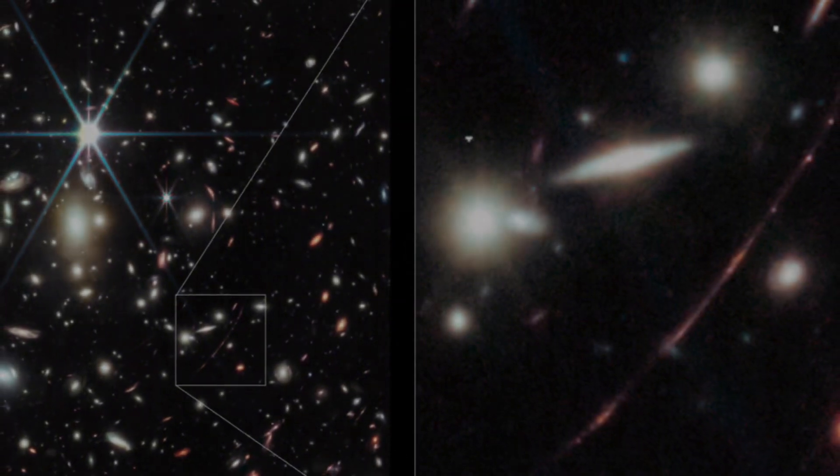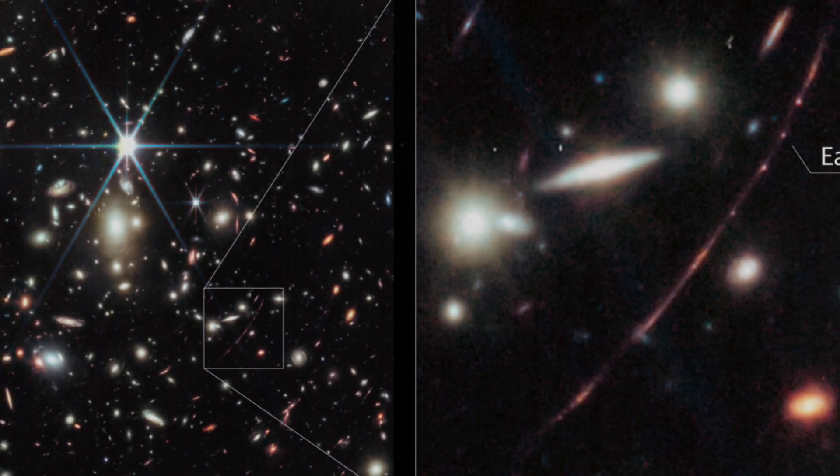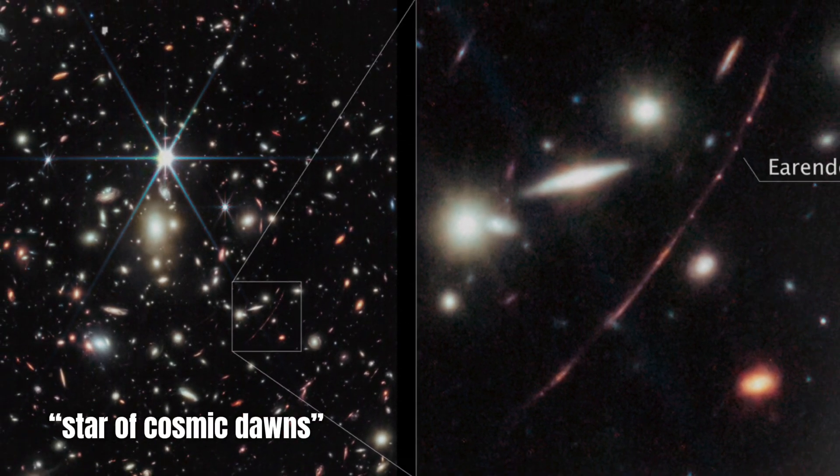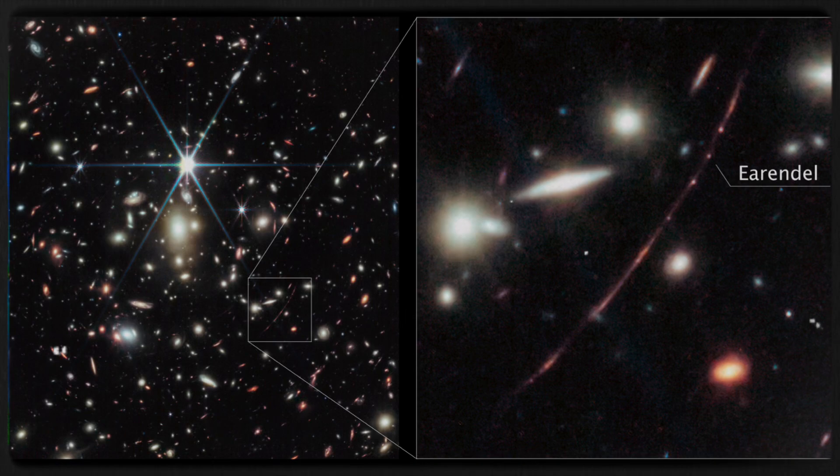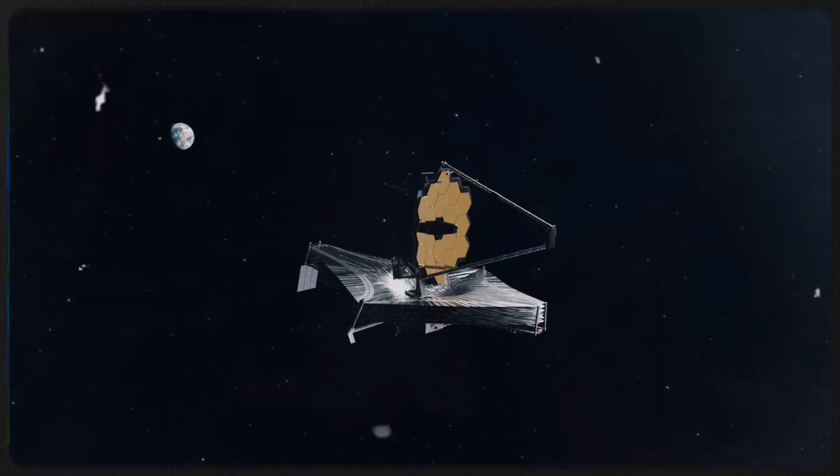Positioned so far away that its light began its journey when the universe was less than a billion years old, Eärendel has earned the nickname Star of Cosmic Dawns, symbolizing its presence in an era when the very first stars and galaxies were forming. The groundbreaking telescope has not only captured Eärendel's ancient light, but has also revealed new details about this stellar relic, offering unprecedented insights into the conditions of the early cosmos.